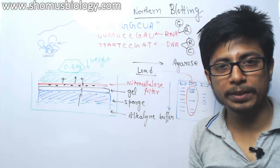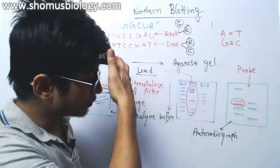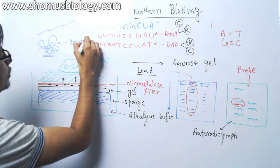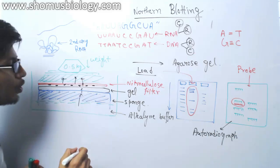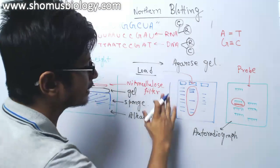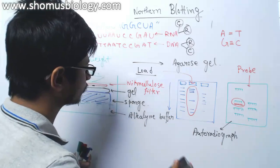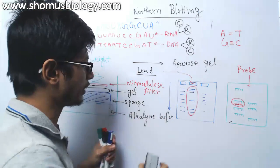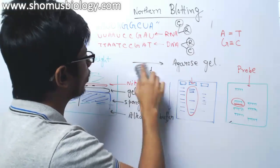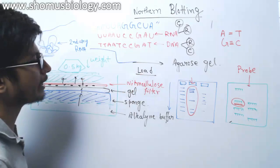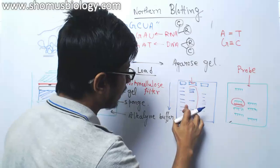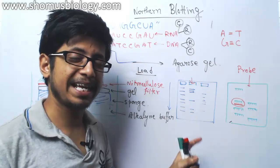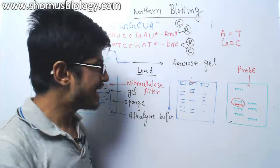This whole process constitutes northern blotting. First, extraction is done — we have the secondary structure of the RNA. We load this RNA onto the agarose gel. The agarose gel used in northern blotting is different compared to the one used in southern blotting: in this agarose gel, we add extra formaldehyde.